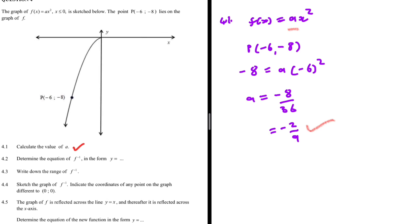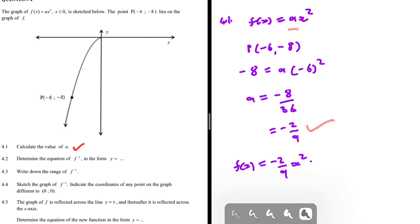That is the value of a for 4.1. Moving forward, we know f(x) equals minus 2 over 9 times x squared. We can verify the value of a is correct by substituting minus 6 and checking we get minus 8. Indeed, substituting minus 6 gives minus 8, which boosts our confidence that what we did in 4.1 is correct.